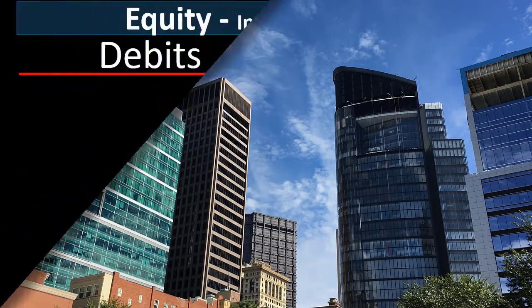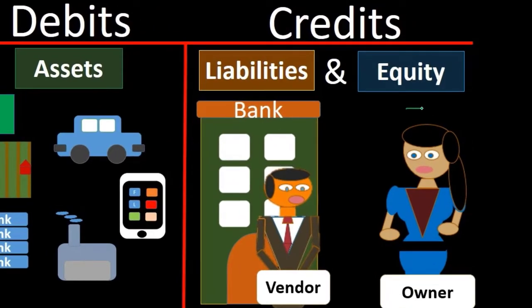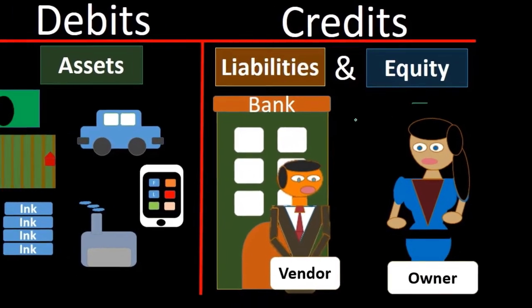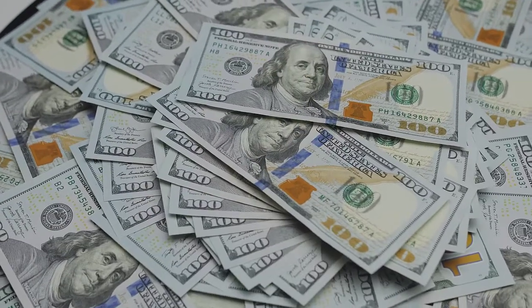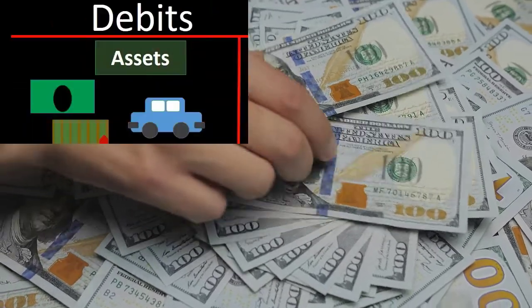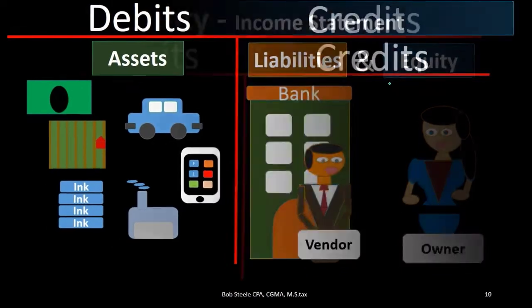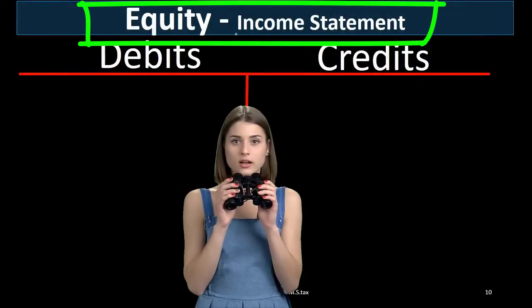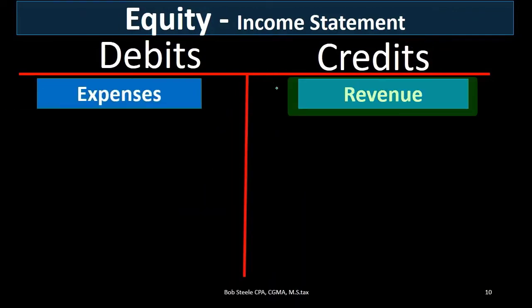The equity section is usually the most confusing piece. Assets, liabilities, and equity — we don't see the income statement when considering the accounting equation in terms of debits and credits. But if we break out the equity section into its income statement components, we would see revenue, which is a credit, and expenses, which are a debit. Revenue typically has one or two accounts, while expenses include things like auto expenses, wages, meals and entertainment, and telephone bill expense.